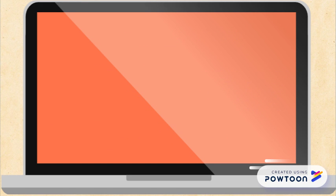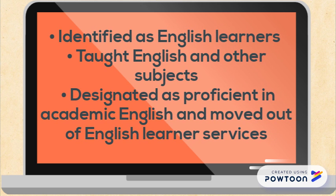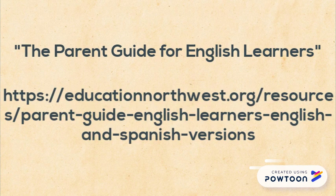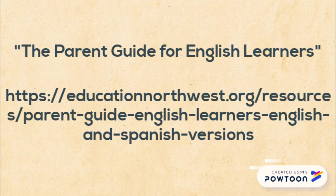This site helps parents understand how their children are identified as English learners, taught English and other subjects, designated as proficient in academic English, and moved out of English learner services. The Parent Guide for English Learners gives you basic information about each of these topics.